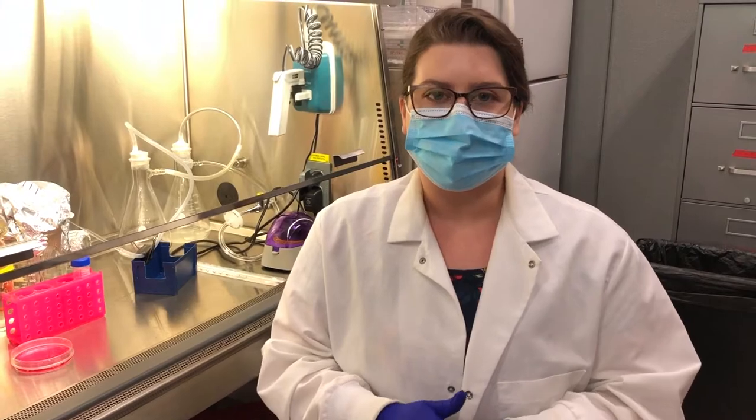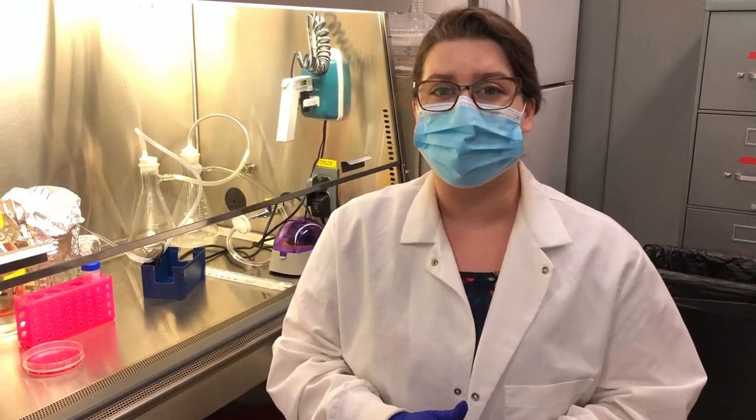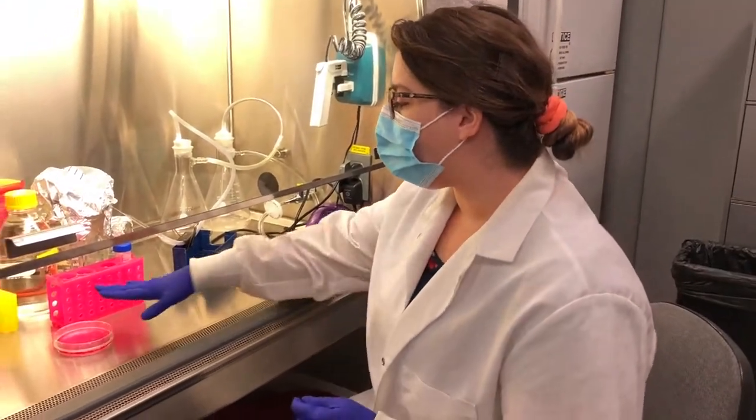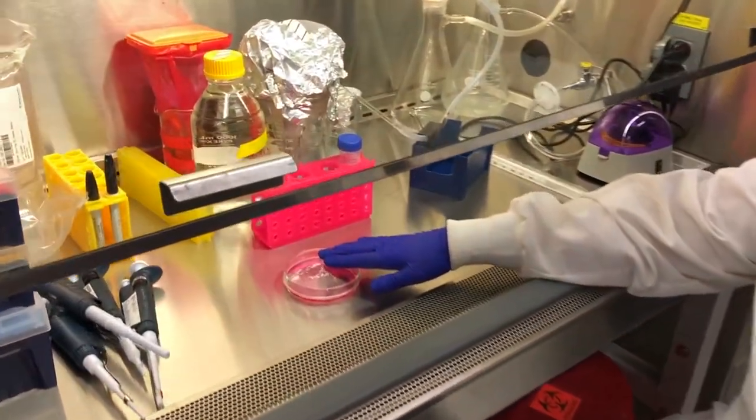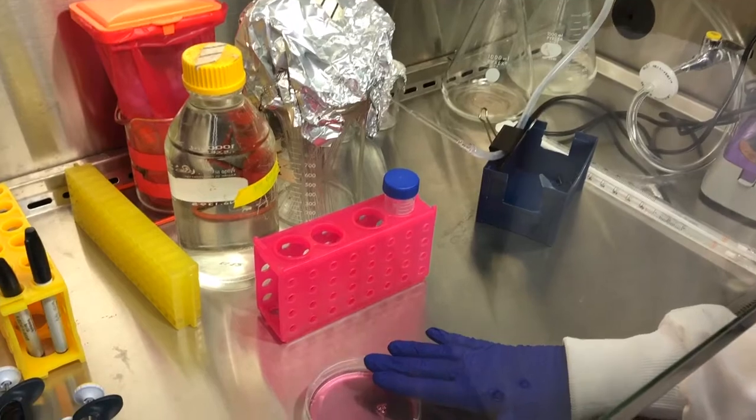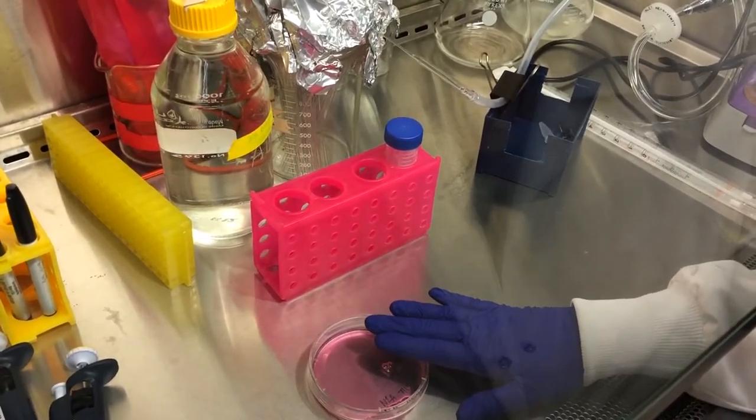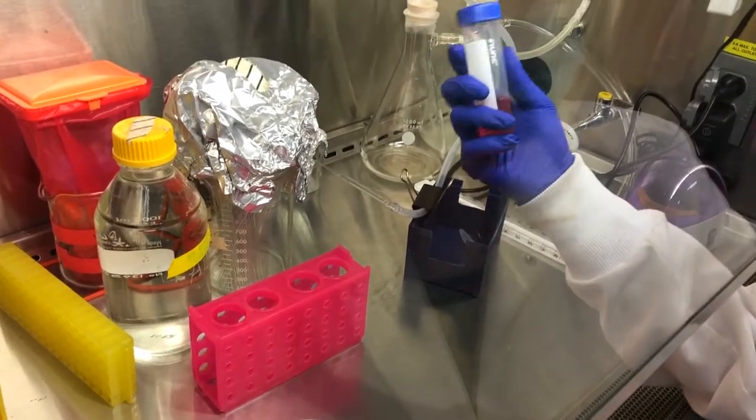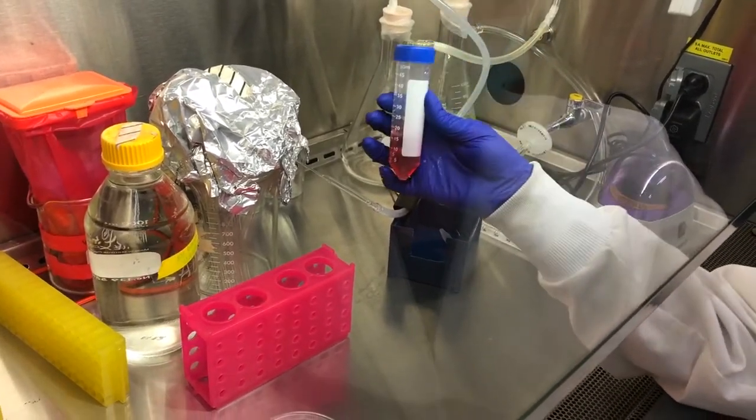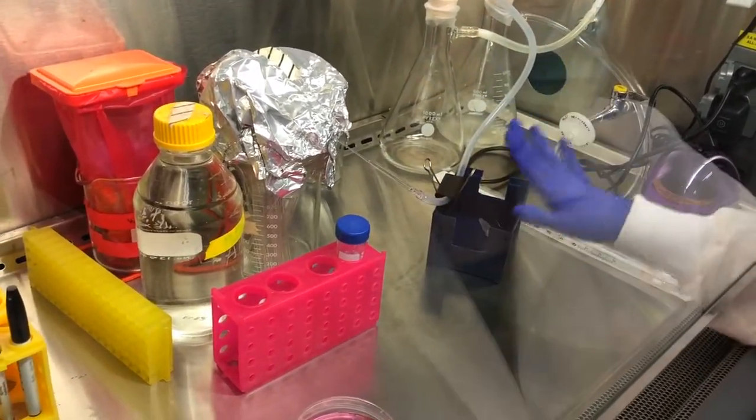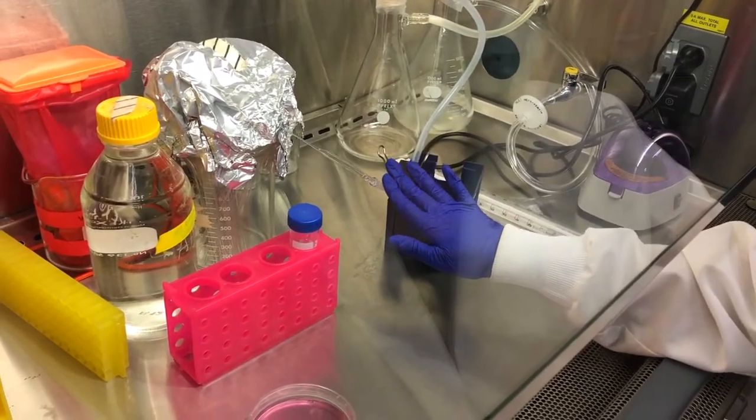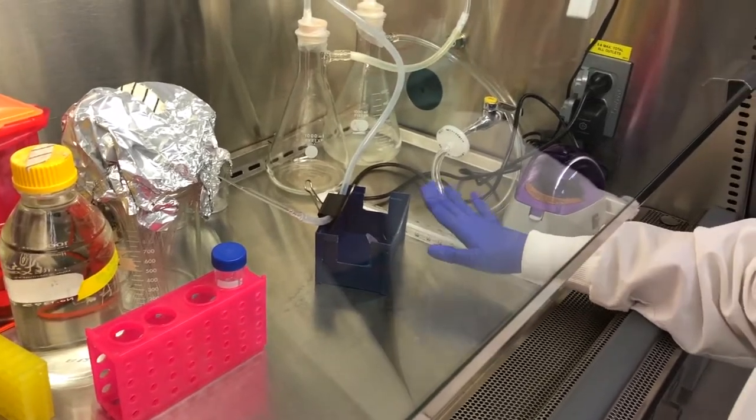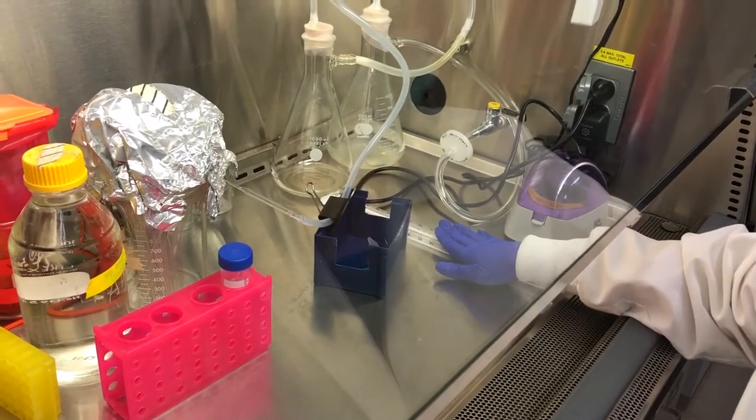So today in our example we're going to do something called a one to two split. So here we have our tissue culture plate with our cells. This dish contains 10 mils of media. We also have our fresh media that's been already warmed. We have our glass pasture pipette already connected to the vacuum. And we have our 10 mil pipettes.